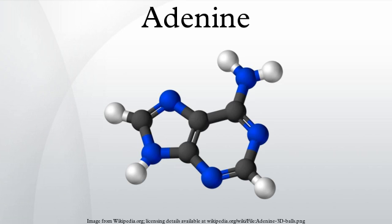On August 8, 2011, a report based on NASA studies with meteorites found on Earth was published suggesting building blocks of DNA and RNA may have been formed extraterrestrially in outer space. Also in 2011, physicists reported that adenine has an unexpectedly variable range of ionization energies along its reaction pathways, which suggested that understanding experimental data on how adenine survives exposure to UV light is much more complicated than previously thought. These findings have implications for spectroscopic measurements of heterocyclic compounds.